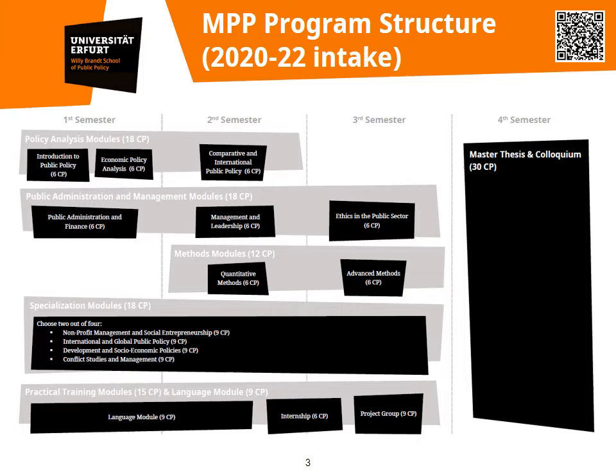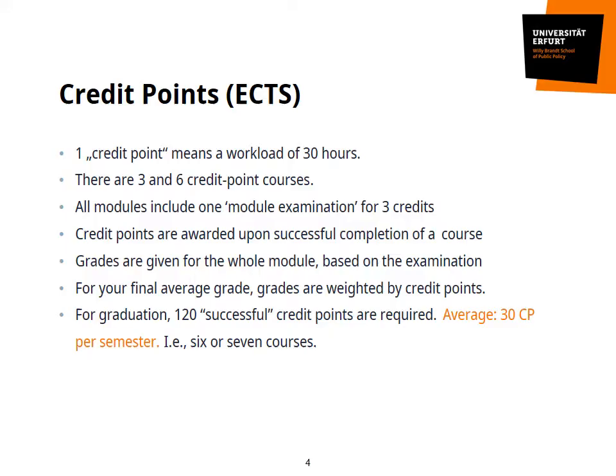Here you see an overview of the whole curriculum, already grouped into modules visualized in black. From left to right you see the progression of your four semesters, which will structure your two years of study at Brandt School. The big block to the right is your Master's Thesis. We will now briefly go into all the modules before finishing off by introducing course registration.